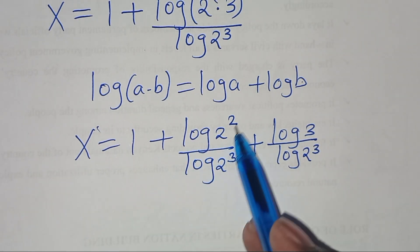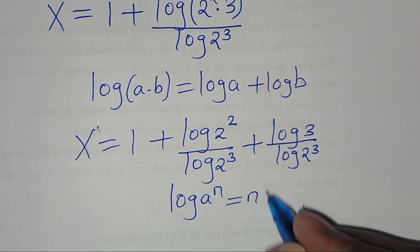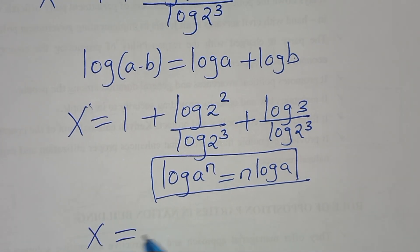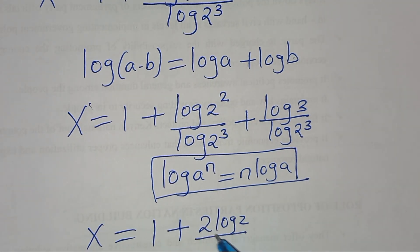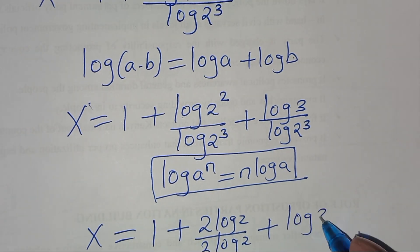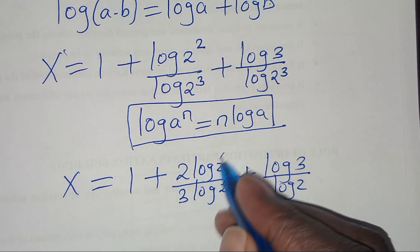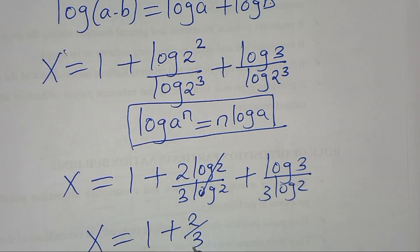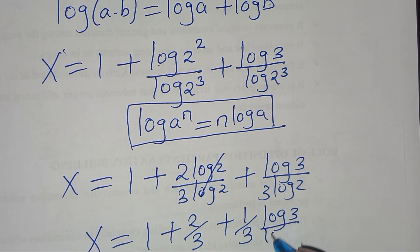Applying the power root property — log(a^n) can be expressed as n·log(a) — log(2²) becomes 2·log(2) and log(2³) becomes 3·log(2). So x equals 1 plus 2·log(2) divided by 3·log(2), plus log(3) divided by 3·log(2). Since log(2) cancels, x equals 1 plus 2/3 plus (1/3)·log(3)/log(2).